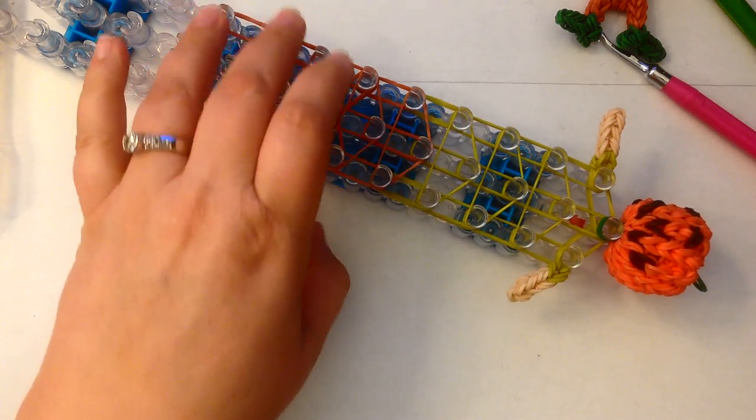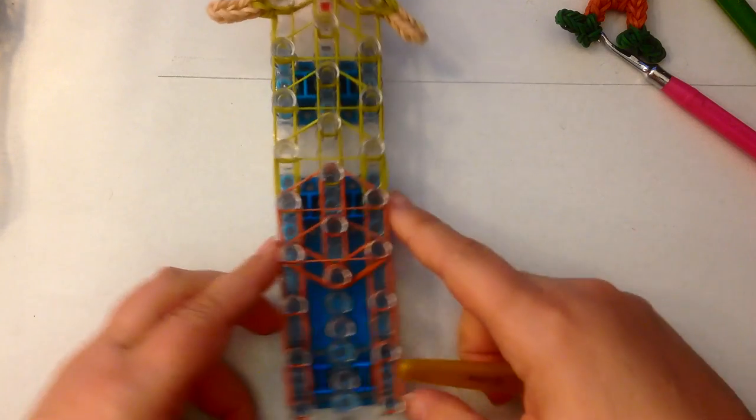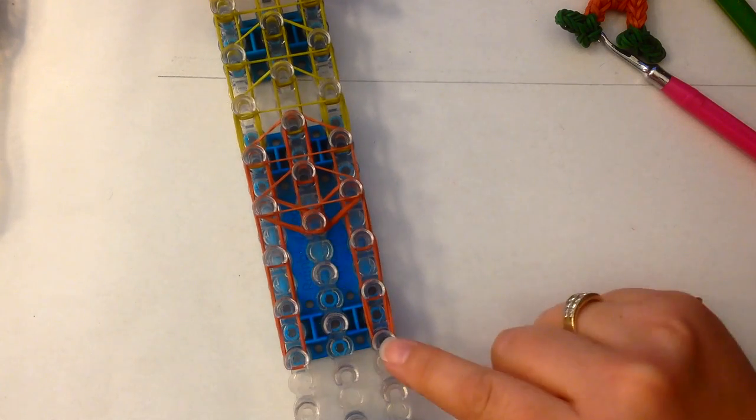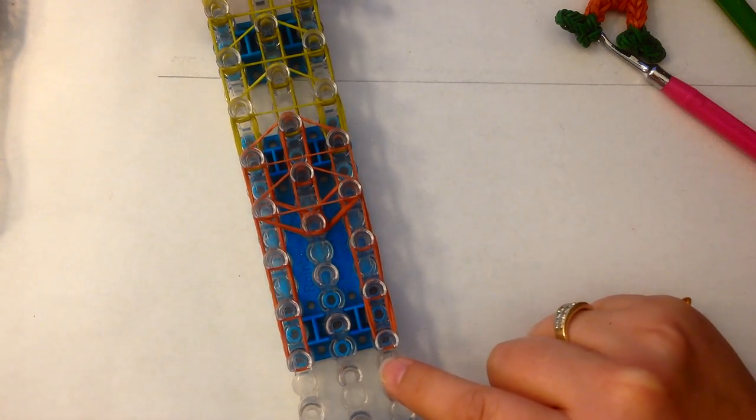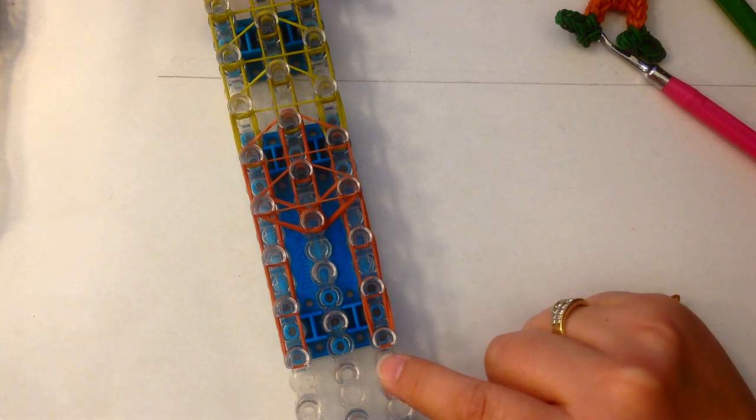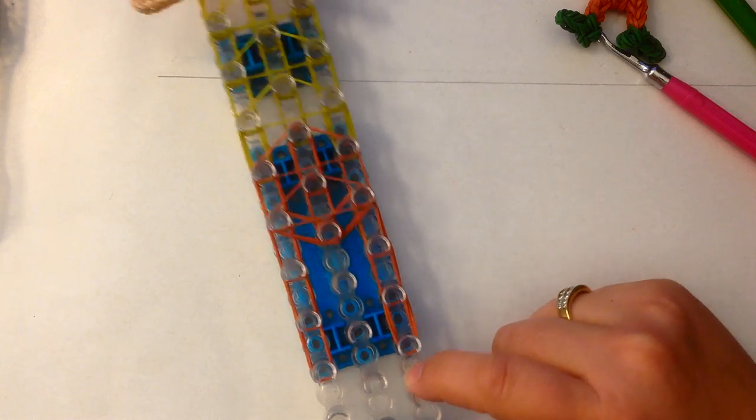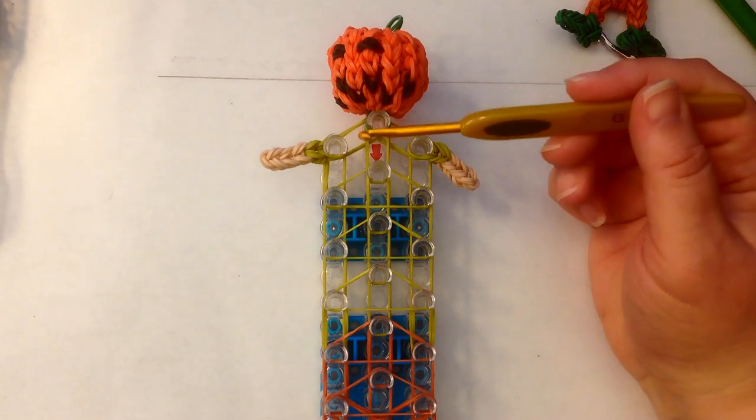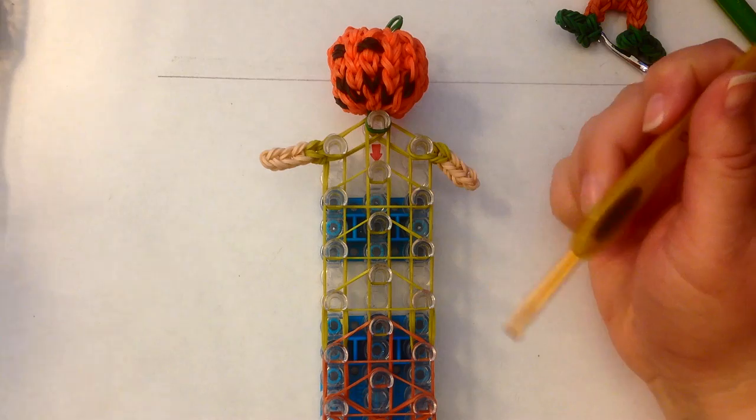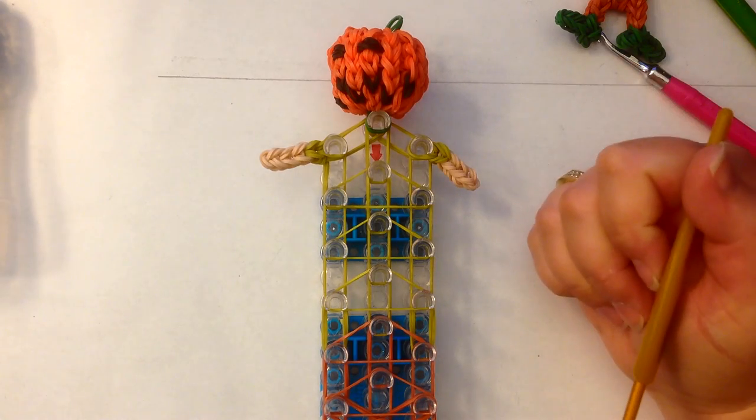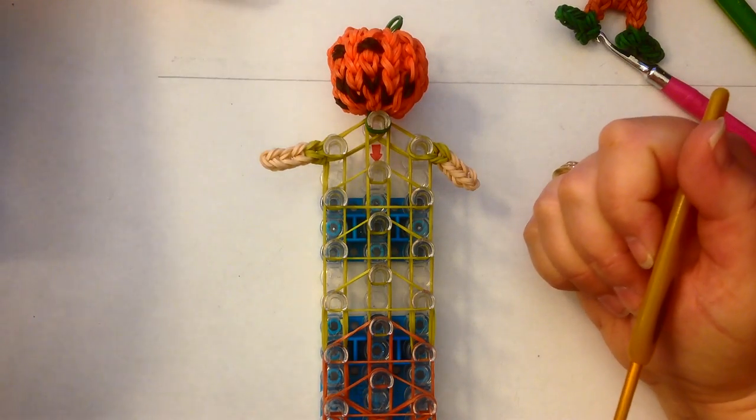So now we have to do some feet. Okay. Now, as you can see, I'm not at the bottom of the loom. I don't need to be at the bottom of the loom because basically, we haven't done a head or any hair or anything like that. I've finished with orange. I'm going to get that out of the way. We need feet.